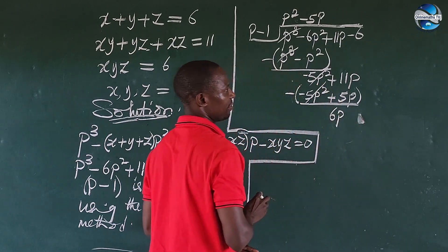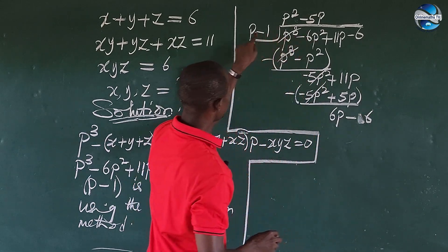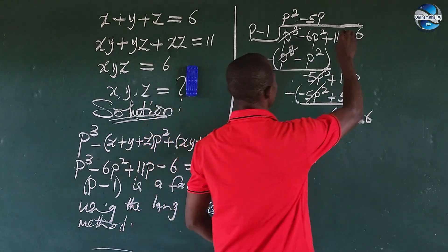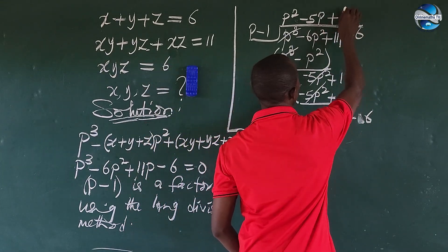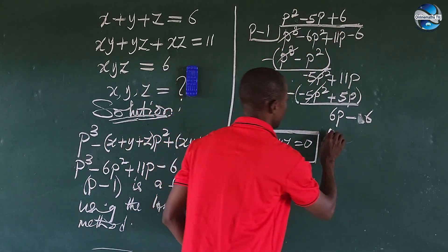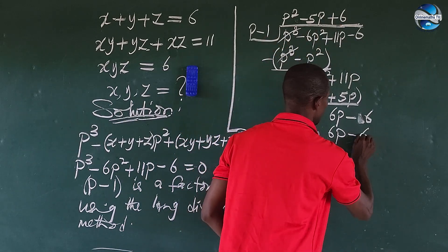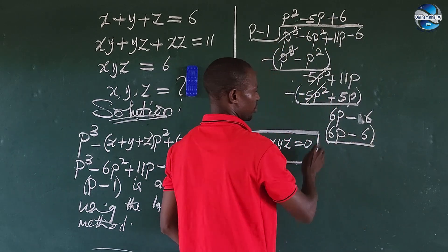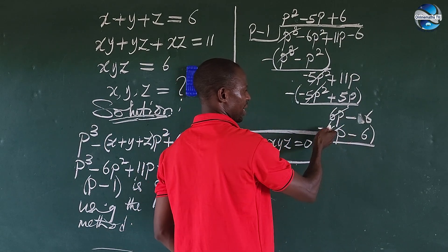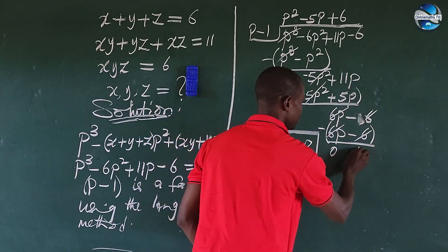We have 6P left. Bring down the last term, which is minus 6. Dividing P into 6P gives 6. Multiplying 6 by P minus 1 gives 6P minus 6. Subtracting, because minus times minus gives plus, everything cancels and we get remainder 0.